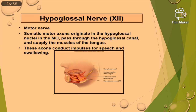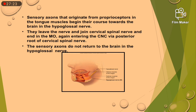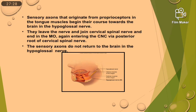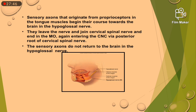The hypoglossal nerve is the 12th cranial nerve. It is a motor nerve. Hypo means below, glossal means tongue — so it supplies below the tongue. Somatic motor axons originate in the hypoglossal nuclei in the medulla oblongata, pass through the hypoglossal canal, and supply the muscles of the tongue. These axons conduct impulses for speech and swallowing. Sensory axons originating from proprioceptors in the tongue muscles begin in the hypoglossal nerve, leave the nerve, join the cervical spinal nerve, and end in the medulla oblongata via the posterior root of the cervical spinal nerve. The sensory axons do not return to the brain in the hypoglossal nerve.